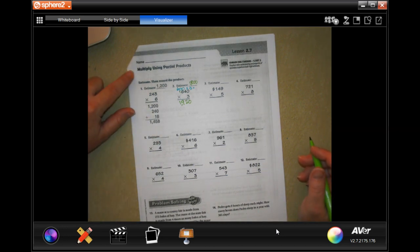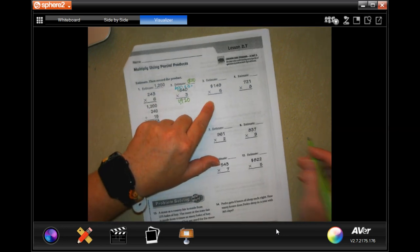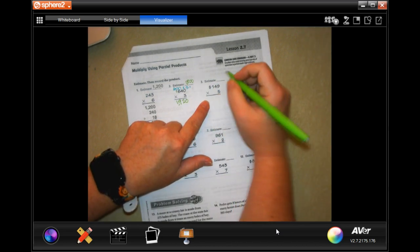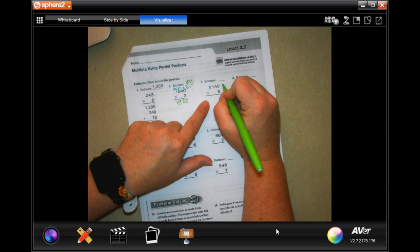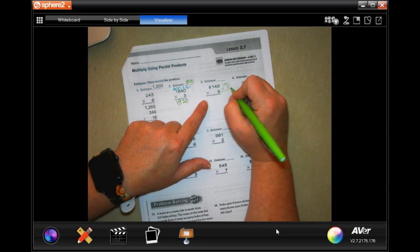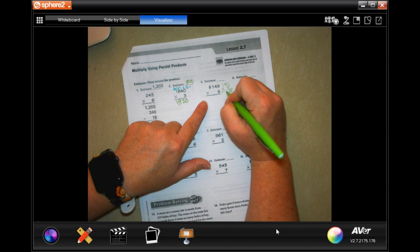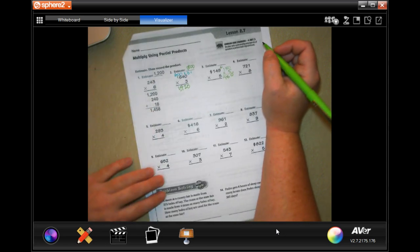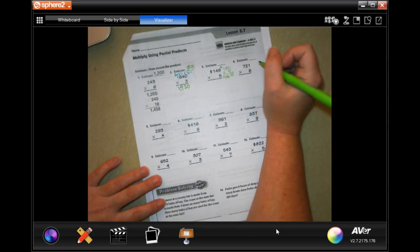So using partial products, it wants us to break them up. So our estimate, 149, I would go 150 times 5. It's an estimate, so you can round to the hundreds or you can round to the tens unless it tells you differently. So 0, 25, 750 is our estimate. We're going to be within just a couple dollars of that.